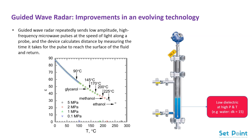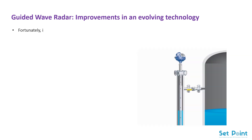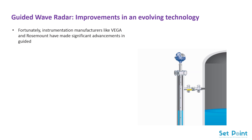However, as water inside the boiler is heated and pressurized, the airspace within is replaced with saturated steam, and saturated steam has different properties than the air it's replacing. Fortunately, instrumentation manufacturers like Vega and Rosemount have made significant advancements in guided wave radar technology to overcome errors like these and maximize level measurement accuracy inside steam boilers.